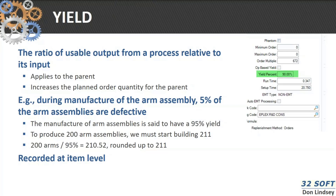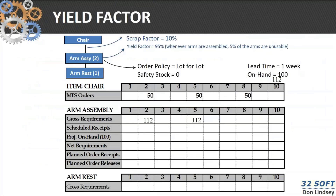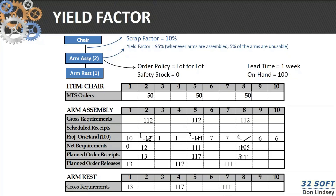There is a yield factor in QAD, which is the ratio of usable output from a process relative to its input. If you fill in a yield factor in menu 1.4.7 or 1.4.17, QAD will add what's referred to as a scrap factor in MRP for every planned order. A scrap factor of 10% means that 10% is added to the bill of material quantity, and you go through that same netting process. At the armrest level, those planned order releases then drive down as gross requirements into that component.